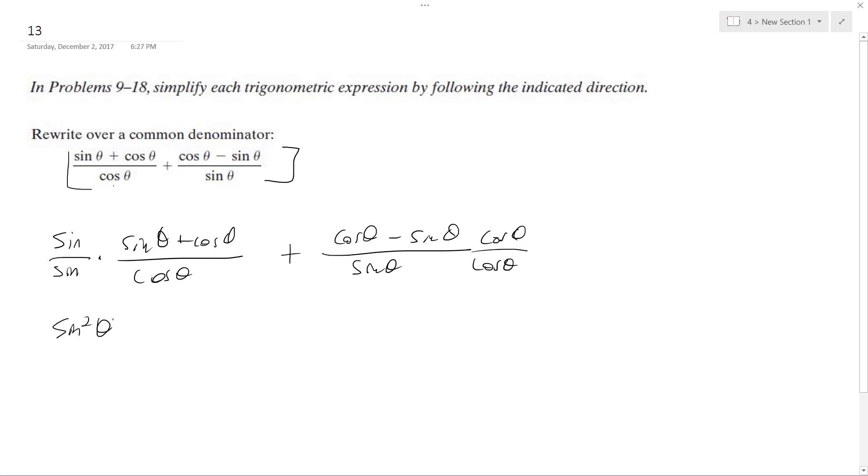So this becomes sine squared theta. I'm distributing the top plus sine theta cosine theta. And on the bottom, I get sine theta cosine theta.